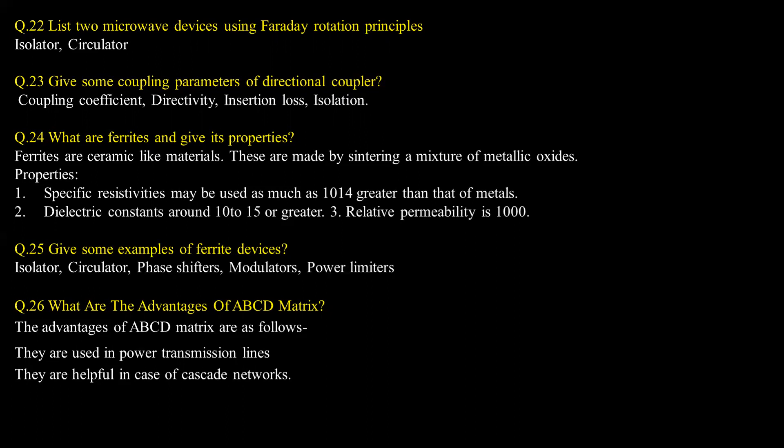Give some examples of ferrite devices: isolator, circulator, phase shifter, modulator, power limiters are ferrite devices. What are the advantages of the ABCD matrix? They are used in power transmission lines. They are helpful in the case of cascade networks.